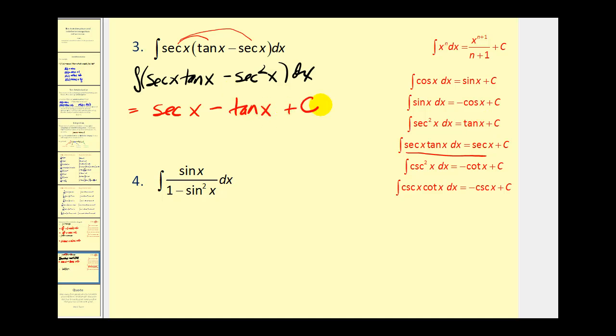On this last example, we notice right away it doesn't fit one of our basic integration formulas, so we have to manipulate this. One thing that comes to mind on this problem, one minus sine squared x is equal to cosine squared x. So let's go ahead and try to replace one minus sine squared x with cosine squared x.